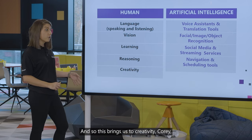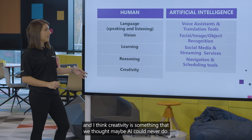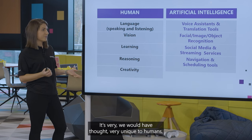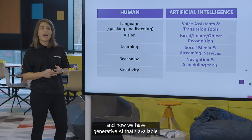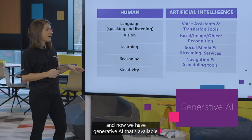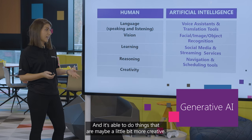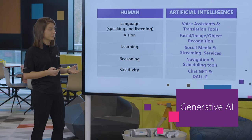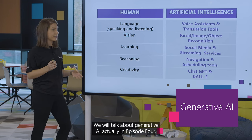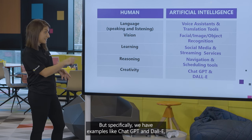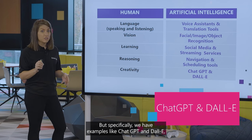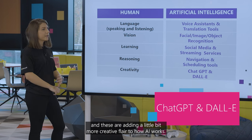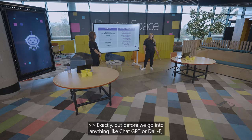This brings us to creativity. Creativity is something we thought maybe AI could never do — we would have thought it was very unique to humans. Now we have generative AI that's able to do things that are maybe a little bit more creative. We'll talk about generative AI in episode four. Specifically, examples like ChatGPT and DALL-E are adding a little bit more creative flair to how AI works.